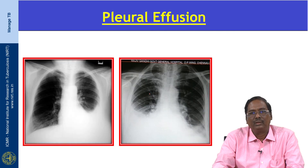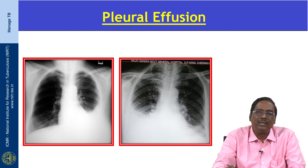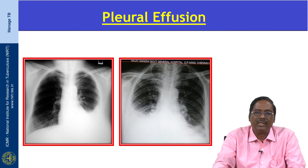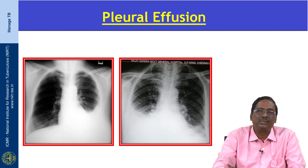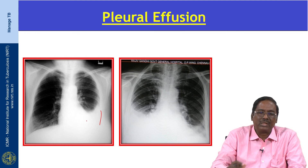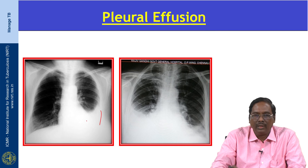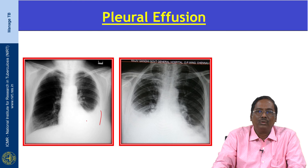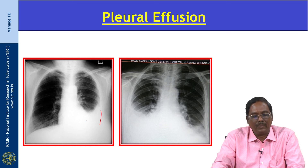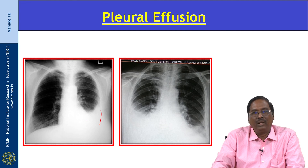Pleural effusion also occurs in post-primary TB, here definitely due to rupture of a sub-pleural focus or cavity into the pleural space. The pleural effusion is either small or sometimes loculated. The presence of loculated pleural effusion in post-primary TB should raise suspicion of a more severe disease with poor prognosis, and adequate anti-TB treatment is required. If left untreated, it leads to pleural thickening and calcification.